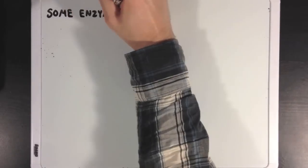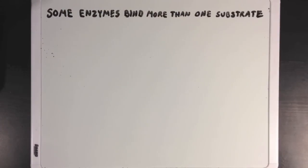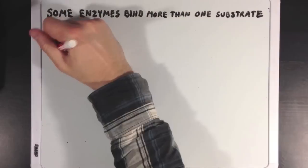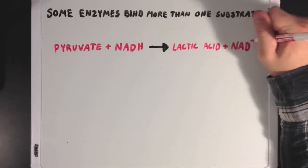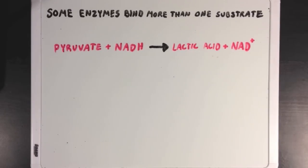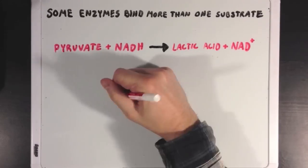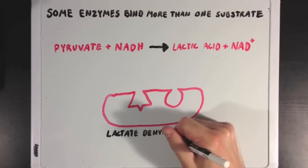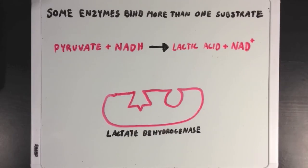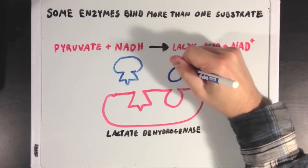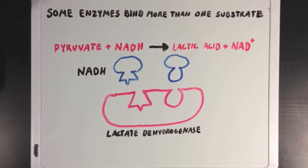Some enzymes will actually bind more than one substrate. Looking at lactic acid fermentation as a familiar example, the enzyme lactate dehydrogenase has space to bind two different substrates: one space for NADH and the other for pyruvate. So enzymes don't necessarily bind just one substrate.